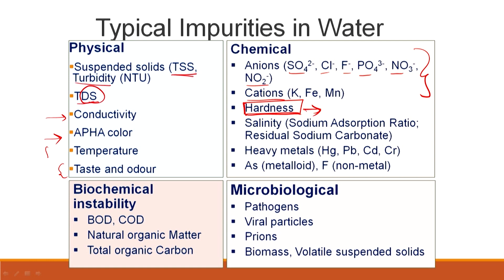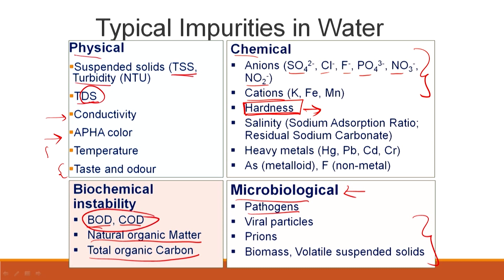We will look at this in greater detail, but the typical categories of concern are physical, chemical, and microbiological. When we say microbiological, we are obviously talking about pathogens. Biochemical instability relates to BOD — biochemical oxygen demand — and chemical oxygen demand, typically caused by the presence of organic matter, usually measured by TOC, BOD, and COD. Heavy metals are also relevant.